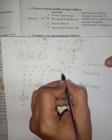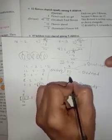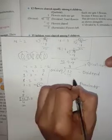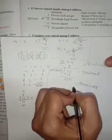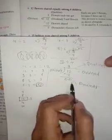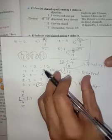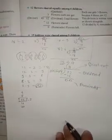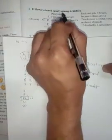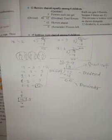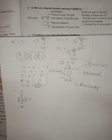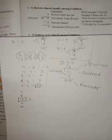Four threes are twelve, so we write twelve here. Now subtract: twelve minus twelve equals zero. So the remainder is zero and our answer is three. That means 12 flowers shared equally among four children — each child will get three flowers.